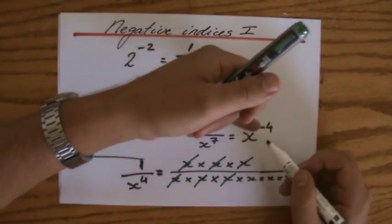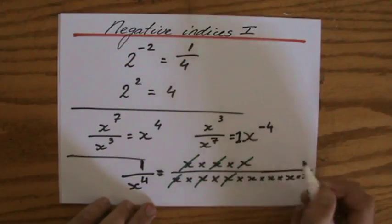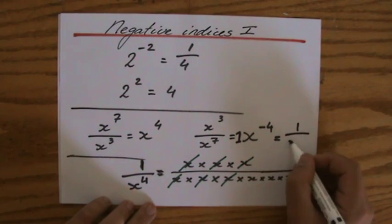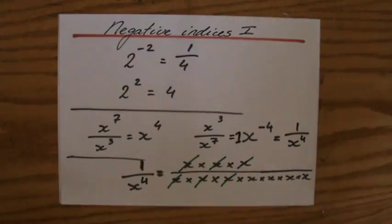So x to the power minus 4, 1x to the power minus 4, is the same as 1 over x to the power positive 4.